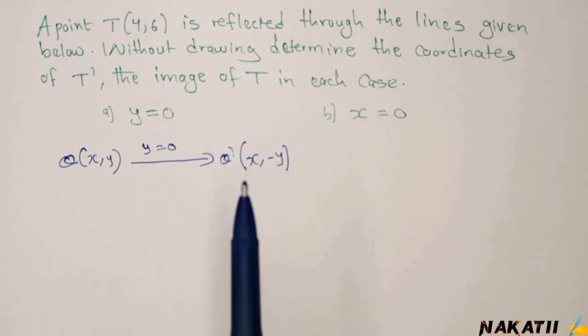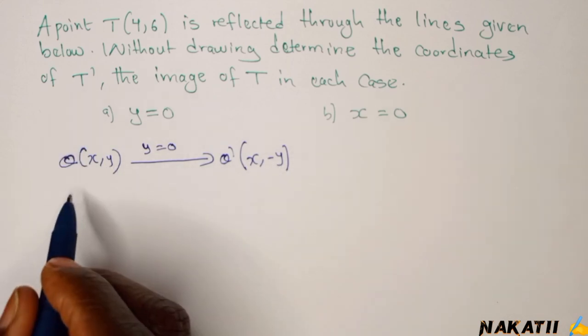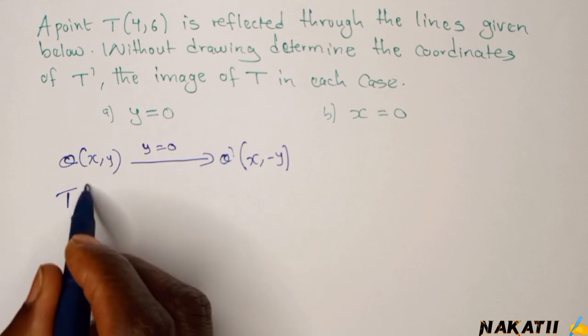So when you're reflecting on the x-axis, the x-coordinate does not change. The only value that changes is y, but only the sign. So here it is negative y.